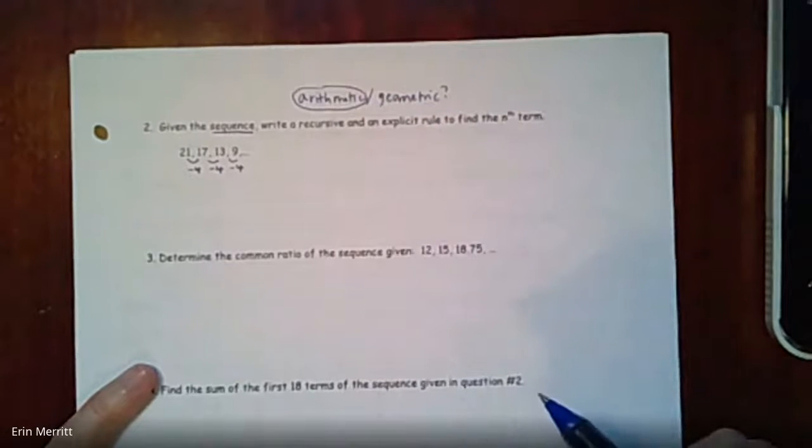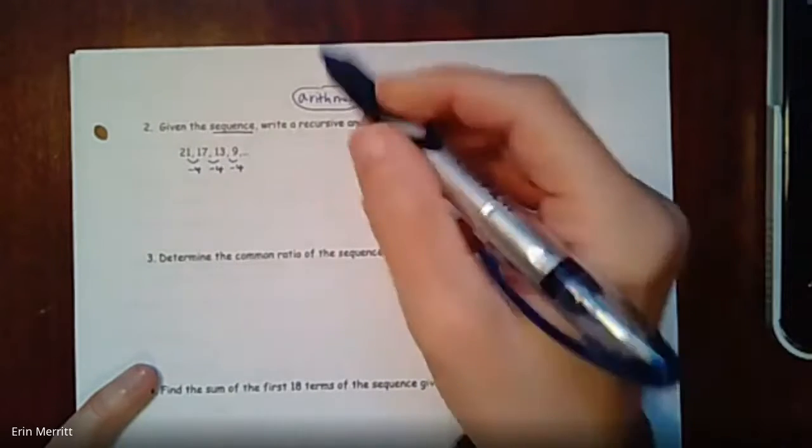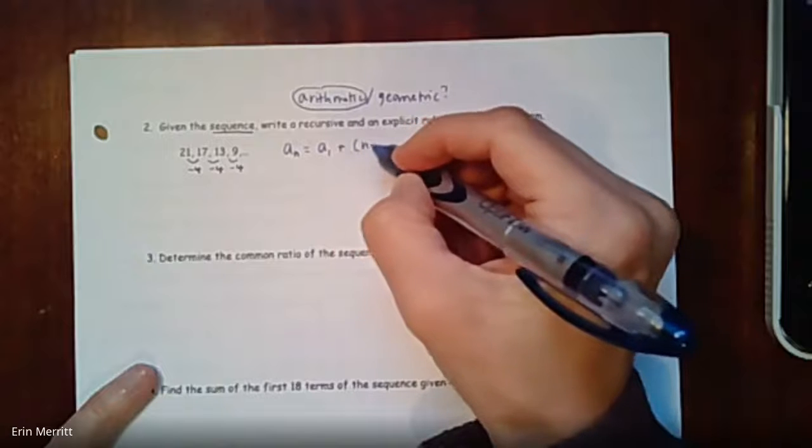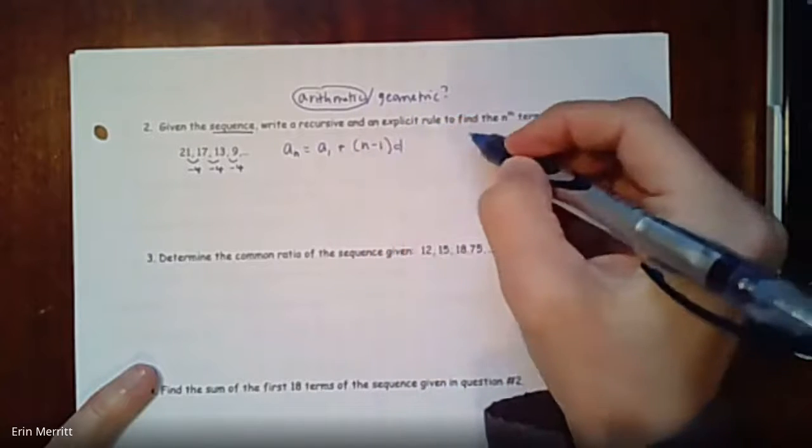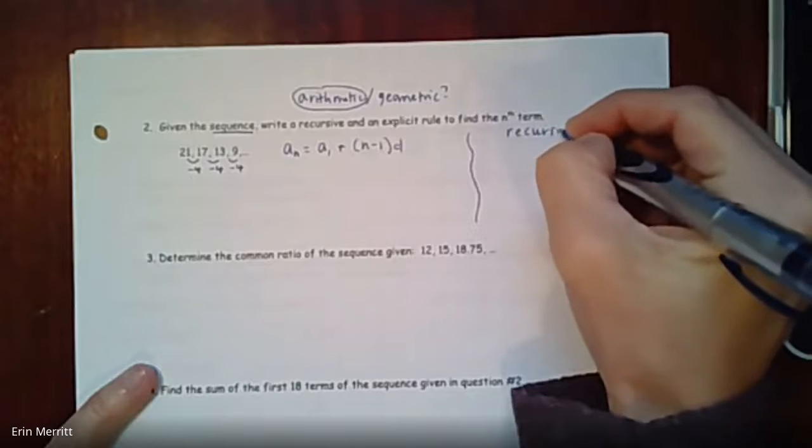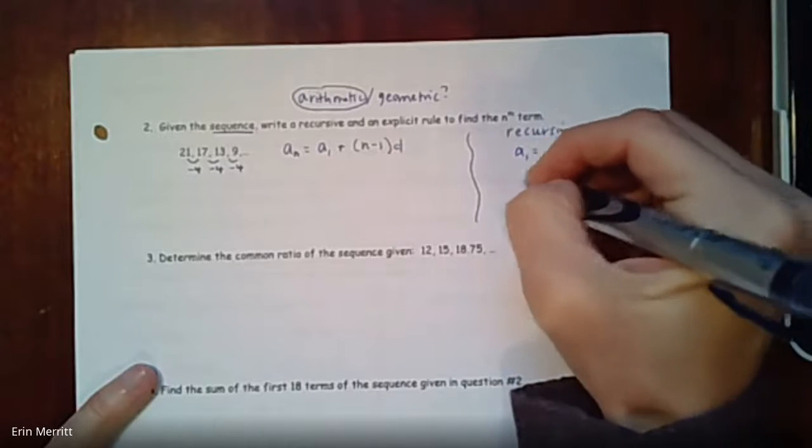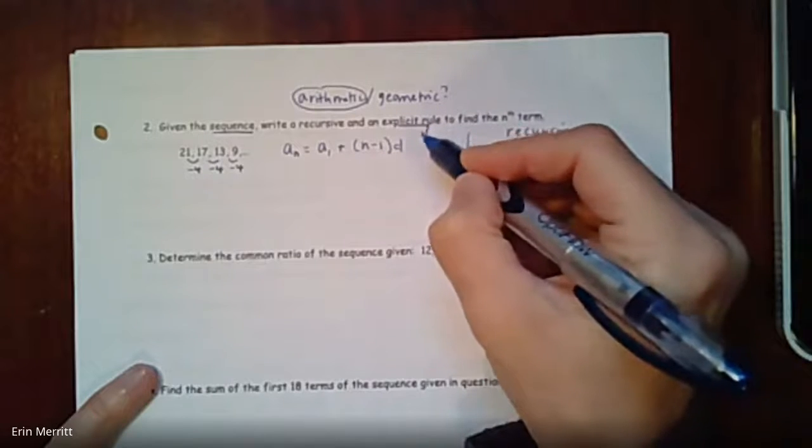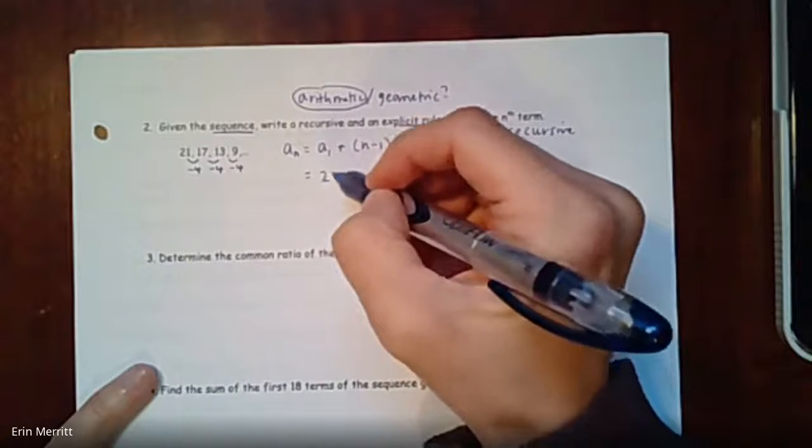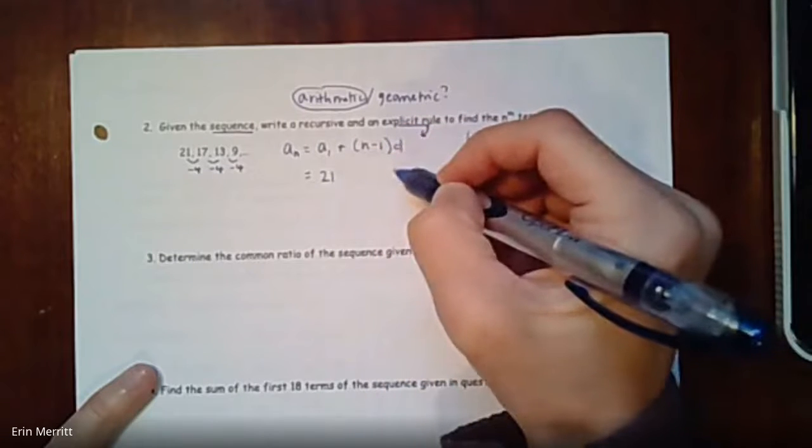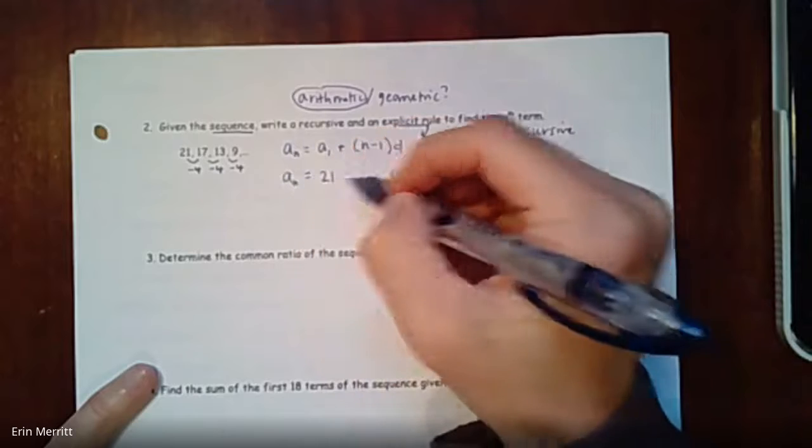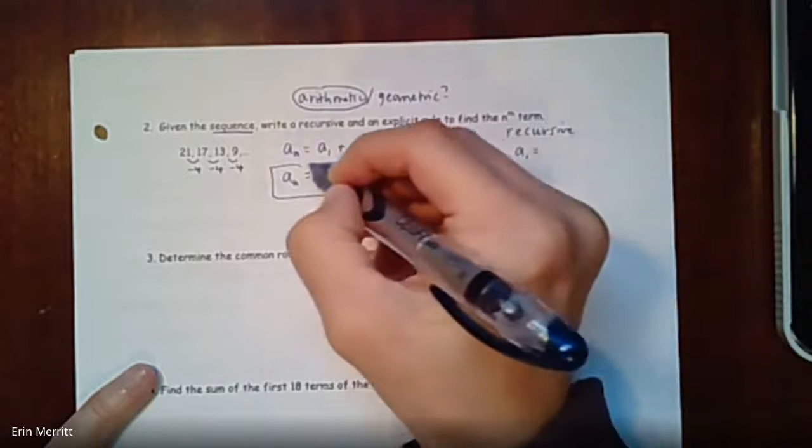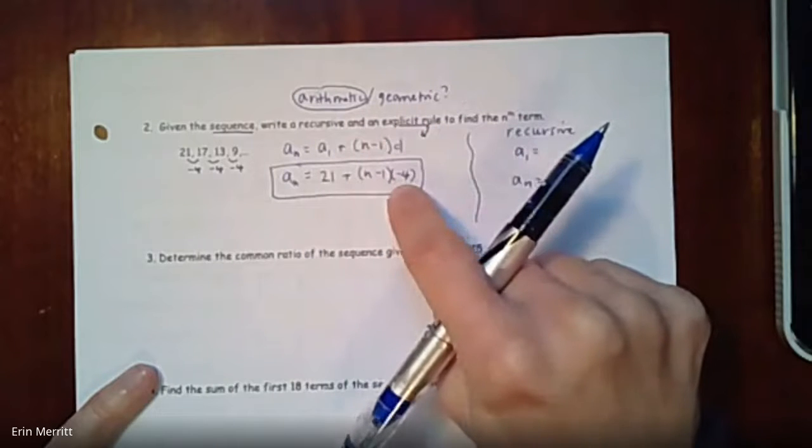It definitely looks like we're subtracting - minus 4, minus 4, minus 4 - so we are talking about an arithmetic sequence here. For explicit, we know the formula: a_1 + (n-1)d. Since this is the explicit, just to make that clear, I just need to plug in for the first term, that's 21, and then my common difference is -4. Everything else with the n's stays.